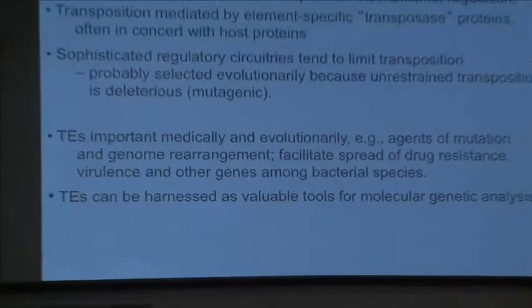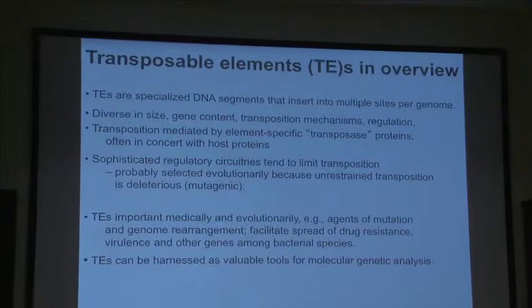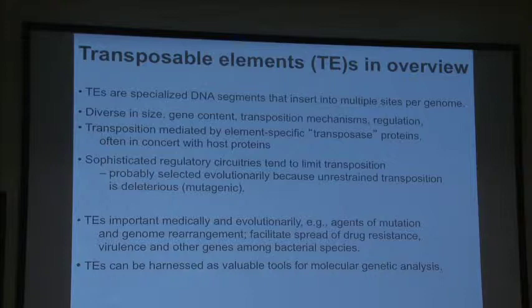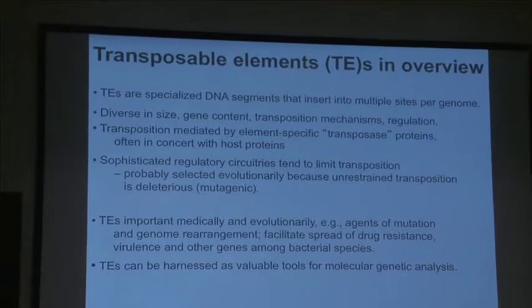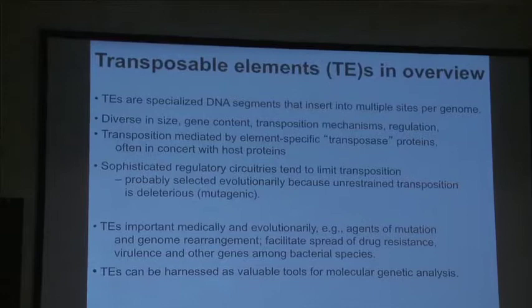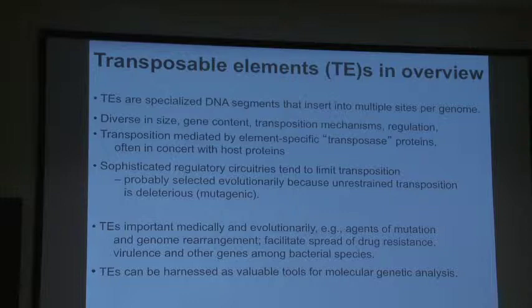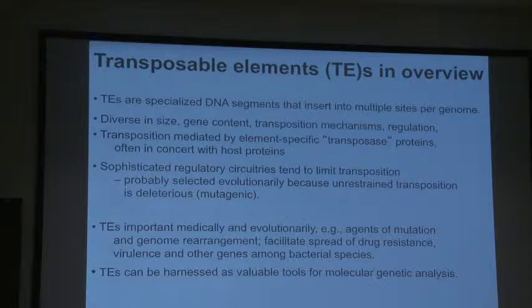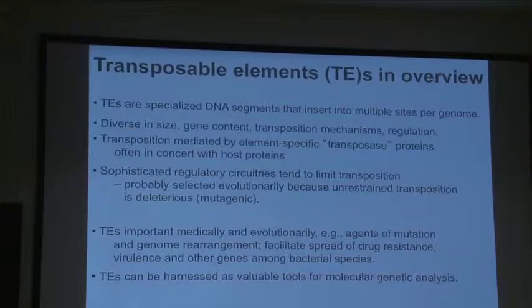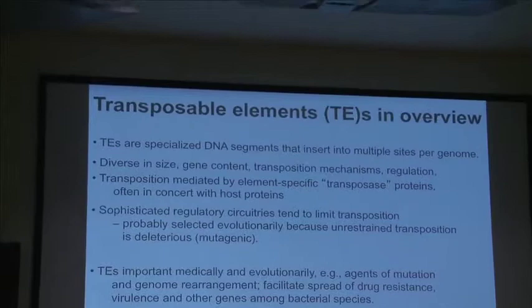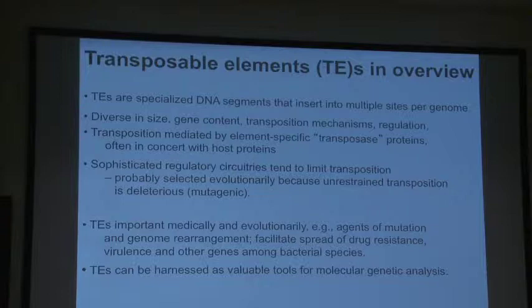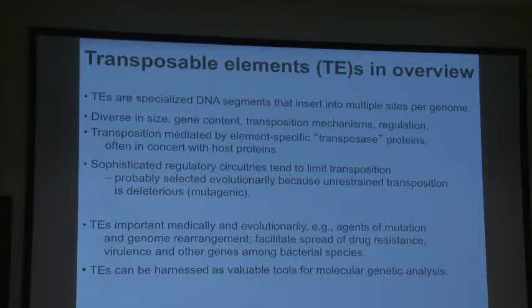You probably all know that transposable elements are specialized DNA segments that can hop into lots of different sites in a genome, typically just inserting cleanly without causing deletion. They're just like bacteriophages — really diverse in size, gene content, and variety of different mechanisms of transposition, with lots of really interesting regulation different from one element to another. Transposition in general is mediated by proteins encoded by the transposable element itself, called transposase proteins. There are sophisticated regulatory circuitries that tend to limit transposition, probably because if an element is transposing like mad into lots of different sites, it causes mutations that will often be deleterious — and if the organism dies, the transposable element typically dies with it.